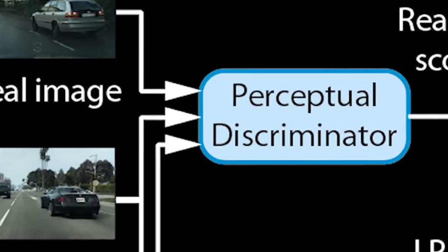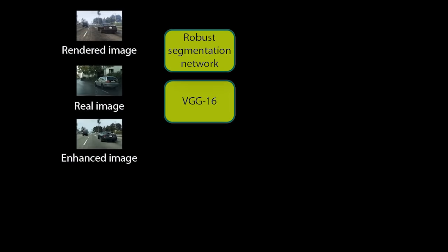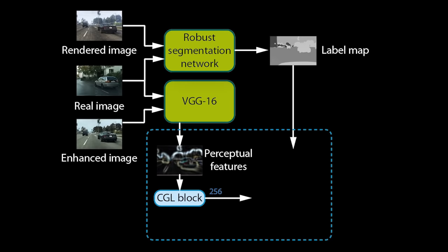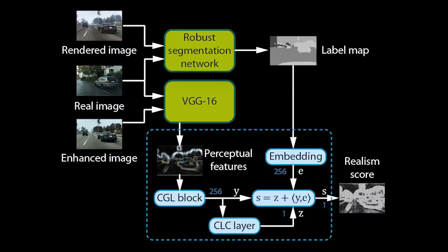Let us now look at how the perceptual discriminator works. The discriminator contains a robust semantic segmentation network and a network for extracting perceptual features — in this case, a VGG-16. We extract features from the VGG at multiple levels and pass them through a convolutional network. This differs from prior work that trains discriminators directly on images. Training on VGG features allows our network to quickly learn a model of realism at multiple perceptual levels. We further pass the unmodified rendered image as well as real images through the segmentation network to obtain a label map for each. The label map is used to specialize the discriminator on individual object classes. Since we use a pre-trained, robust segmentation network, the object classes are consistent for rendered and real images.